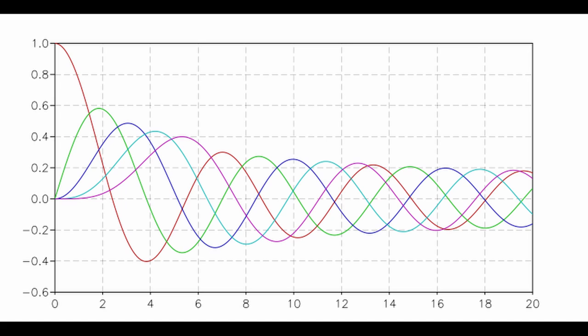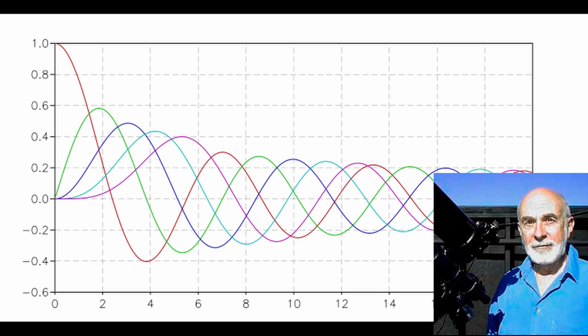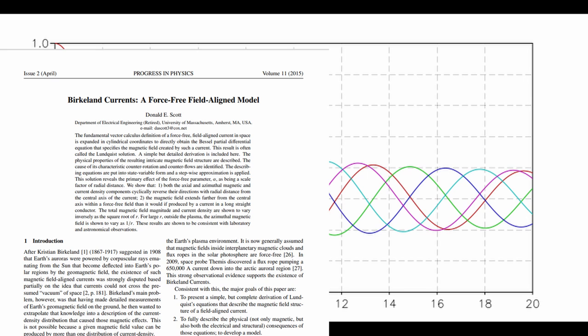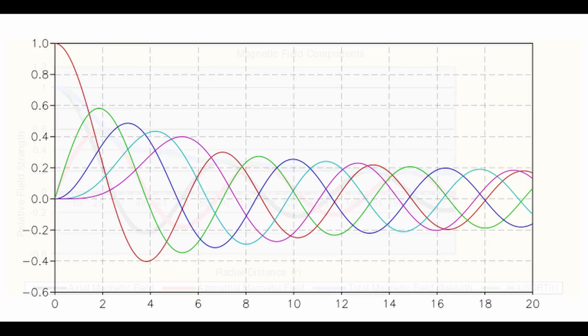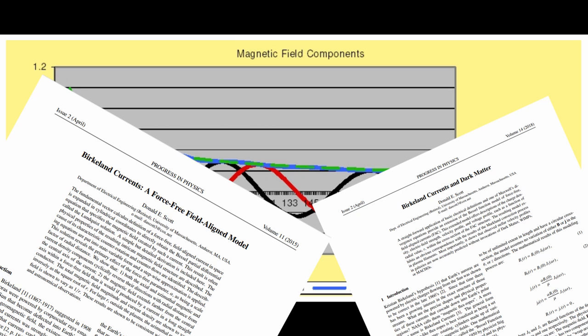Lundqvist first came up with a concept of a Bessel function applied to a Birkeland current in the 1950s. There it would sit for well over 50 years until Don Scott dusted it off and added a much-needed deep analysis to this concept. Don Scott's leap was to take this concept and express the combination of the magnetic and electric current density using the Bessel function. Don goes into a lot more detail in his two papers which are linked below. The effect of the Bessel function is that the magnetic field and the current density will vary according to the Bessel function.